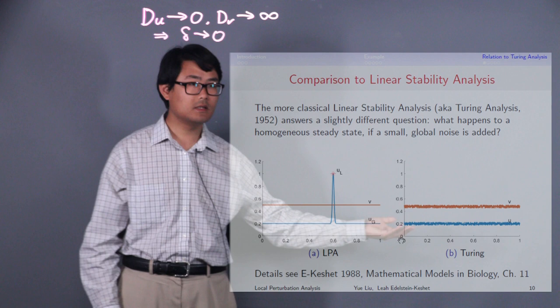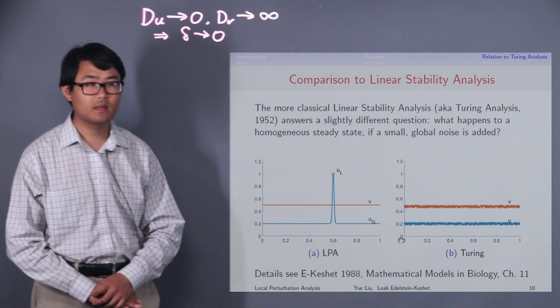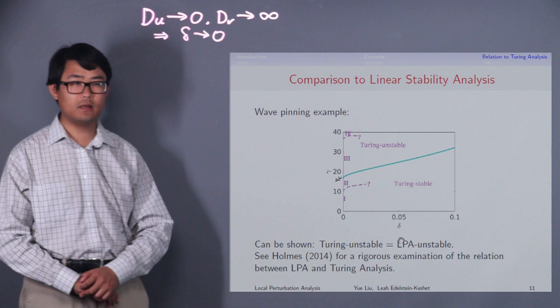However, in Turing analysis, we start near a homogeneous steady state, and we add in a global infinitesimal noise to it.